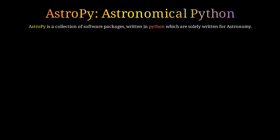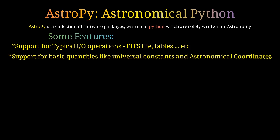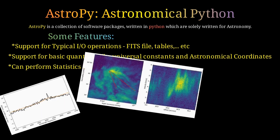Some of AstroPy's core features are: it can read FITS files and analyze data from them; you can access most universal constants; you can transform between different astronomical coordinate systems; and you can perform different types of data modeling. There is much more as well. Now let's do some coding and see how to use AstroPy.